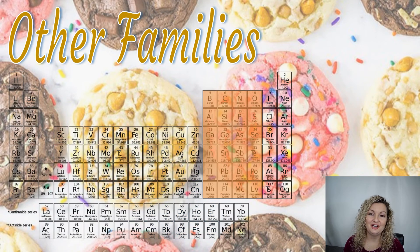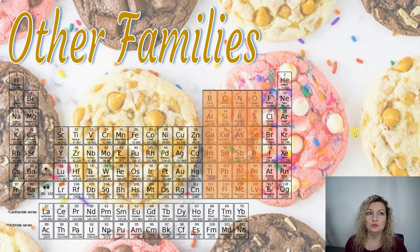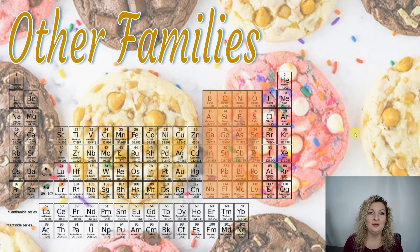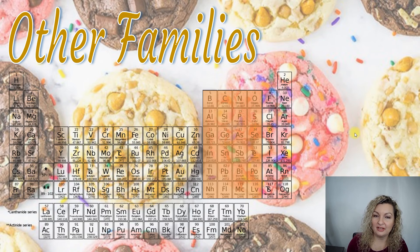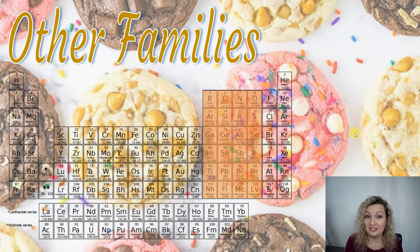There are other families named after their first element: the boron family, carbon family, nitrogen family, and oxygen family — so their names are easy to remember. However, there's nothing extraordinarily noteworthy about these families as a whole. Their properties just aren't as enthusiastically reactive or remarkable as the ones we talked about. They're a little more bland, which is why I chose cookies for these families — cookies come in a variety of colors and flavors, but if you have a plate of cookies next to roasted marshmallows and crème brûlée, you're probably not going after the cookie. It's a plain, ordinary, delicious cookie.